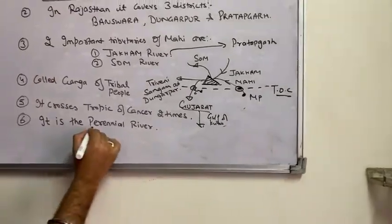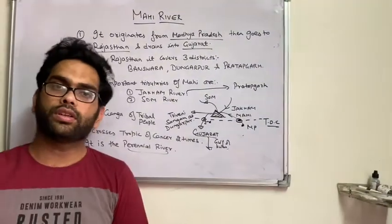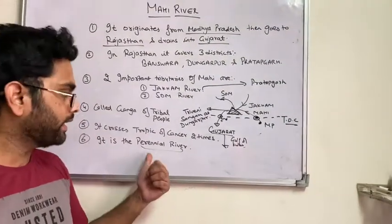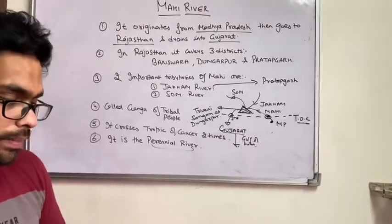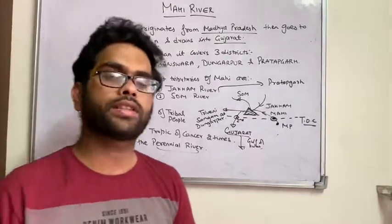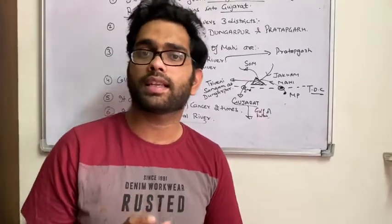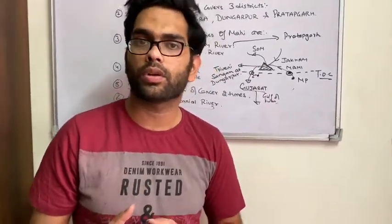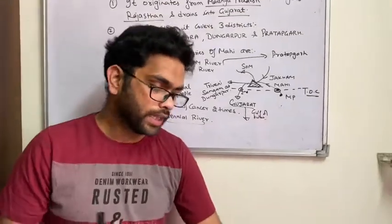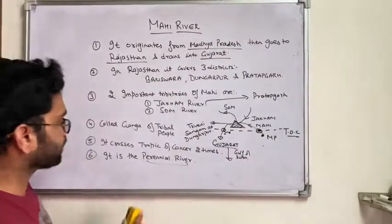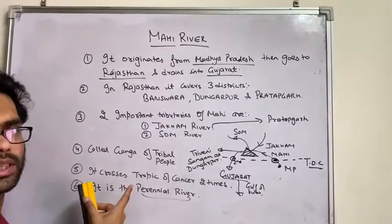The Mahi is also a perennial river — meaning it does not dry up. The Chambal river is also a perennial river in Rajasthan. In exams, questions are asked about which rivers in Rajasthan are perennial and which are non-perennial, so remember that Mahi is a perennial river.